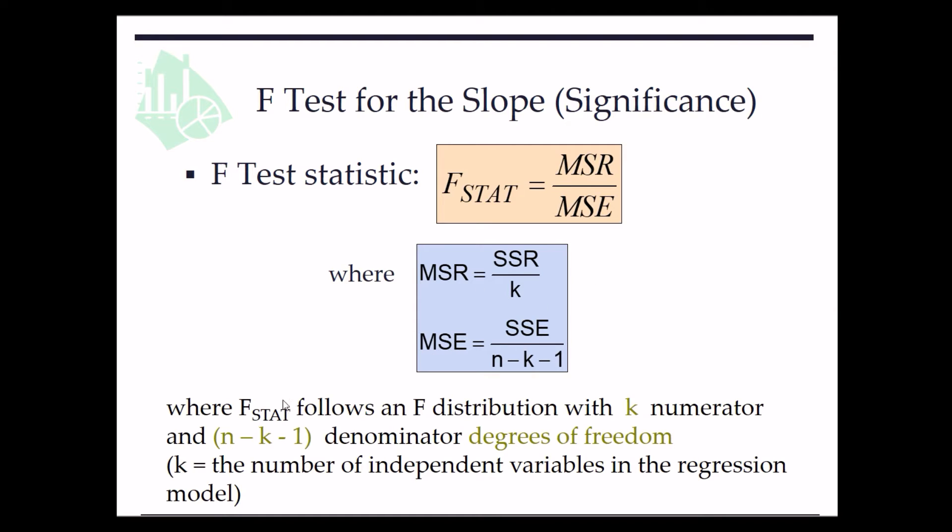Here the F-stat value follows an F-distribution with k numerator and n minus k minus 1 denominator degrees of freedom, where k is the number of independent variables in the regression model.